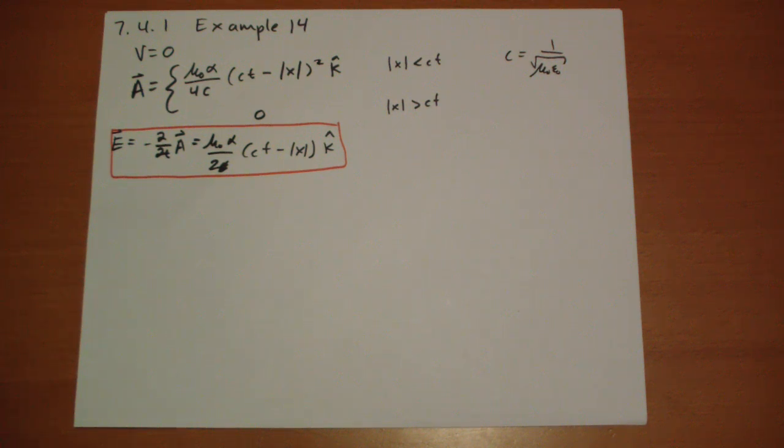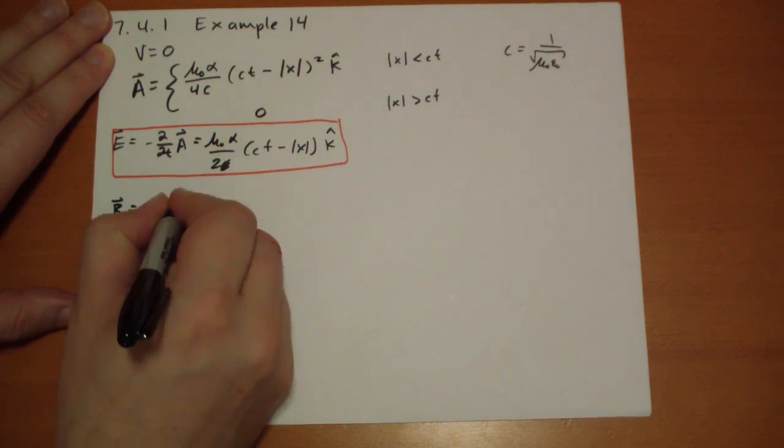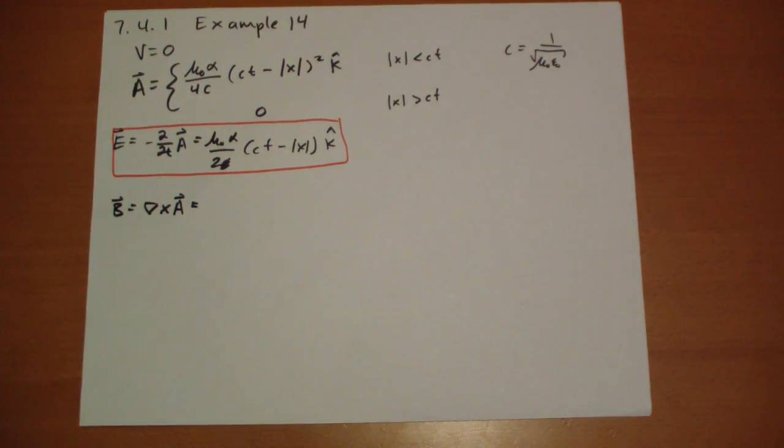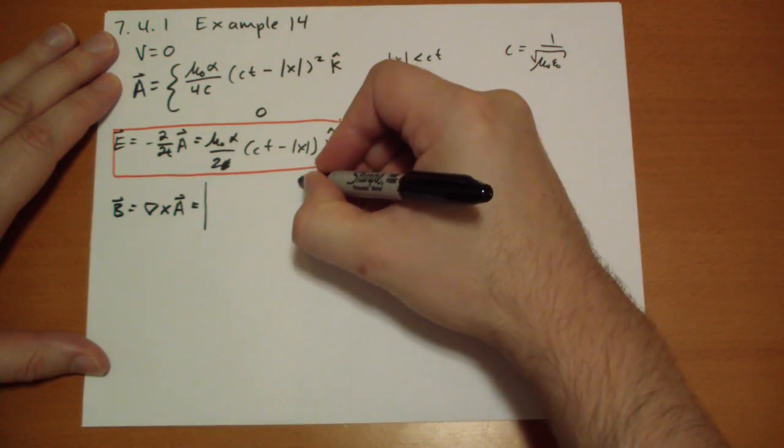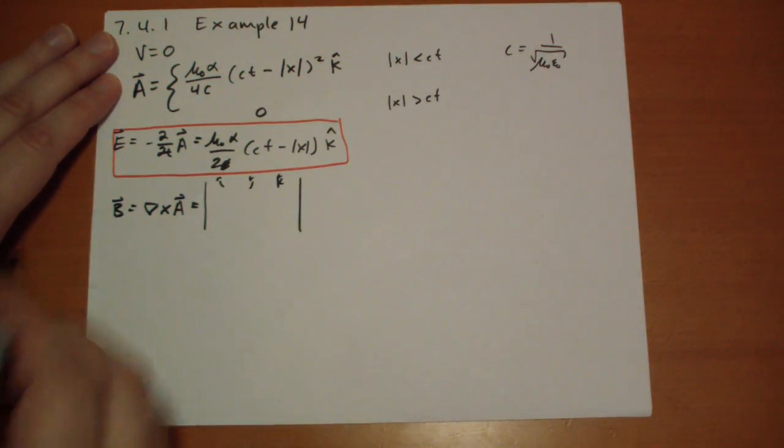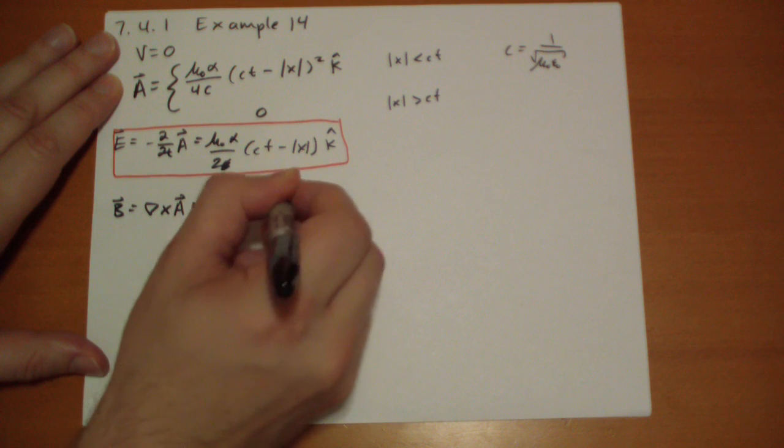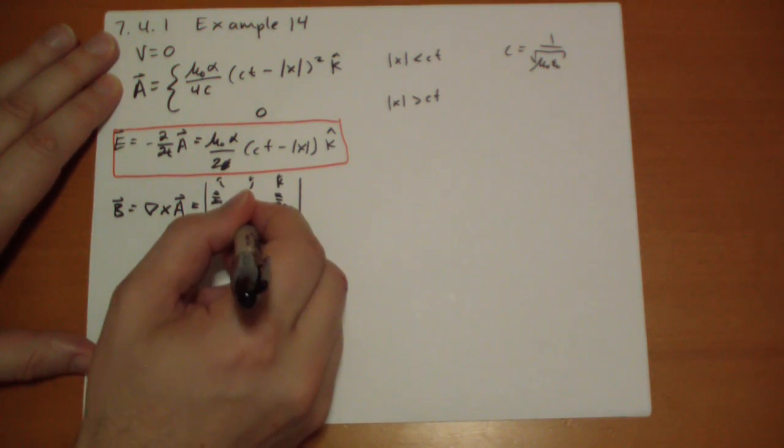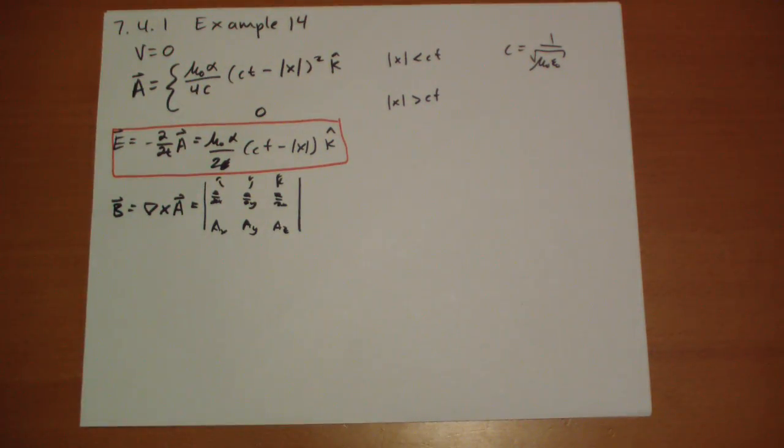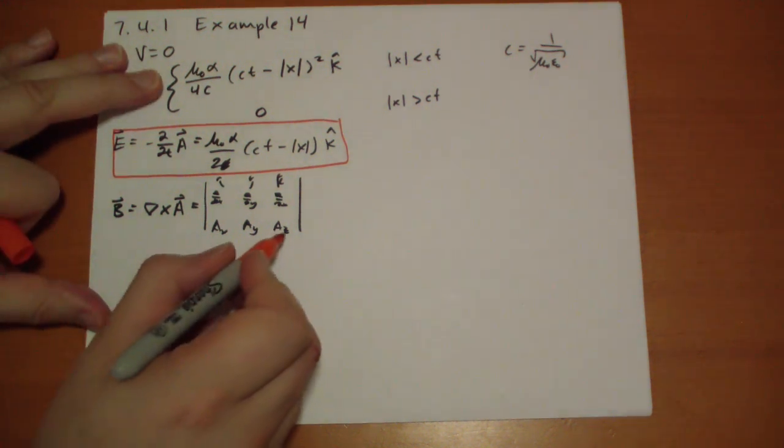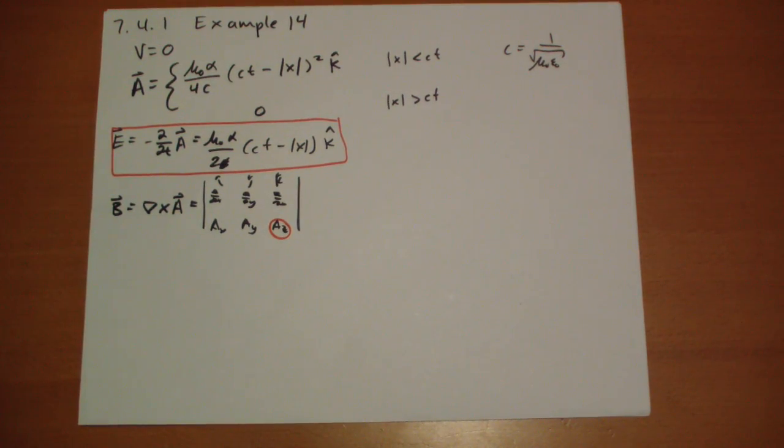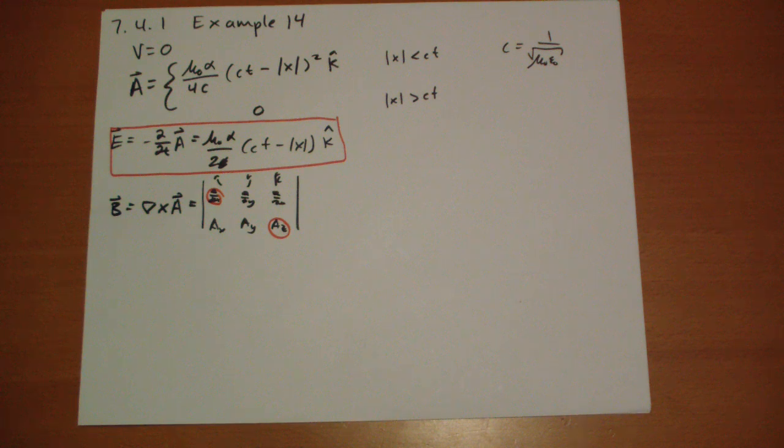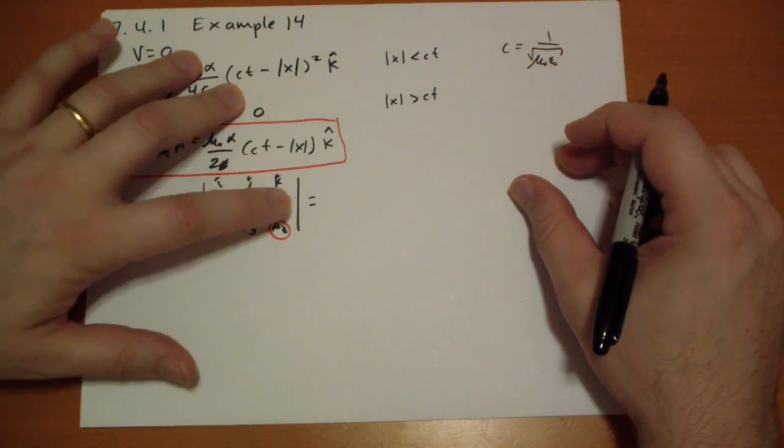Now we're given the B field, which is the curl of A. And there's only one component that we care about, that's the k. But if you want to remind yourself what the curl looks like: we have i-hat, j-hat, k-hat, then d by dx, d by dy, d by dz, and then the x-component of A, the y-component, and the z-component. The only component that has any value is the z-component. So the k-hat direction is right out. And it only has a component in the x-direction. So only this derivative is going to do anything, and we're going to end up in the j-hat direction.